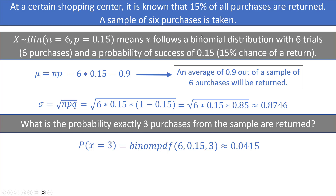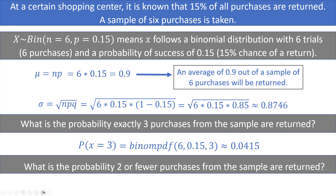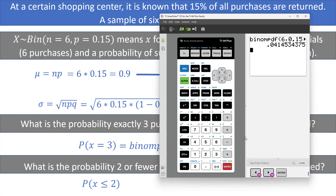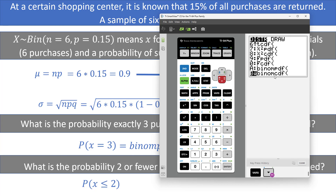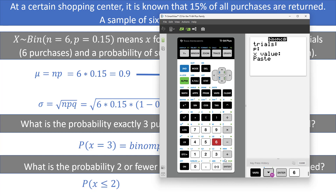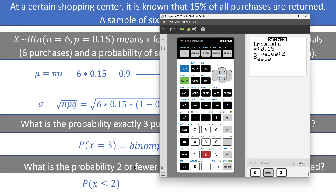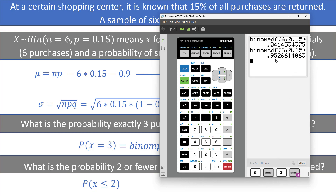What about the probability that two or fewer purchases from the sample are returned? That's P(X ≤ 2), which is a 'less than or equal to' probability, so we use binomial CDF. Go back to the distribution menu, scroll down to binomial CDF, and press enter. We still have 6 trials and p of 0.15, but now our X value is 2. This calculates the probability that two or fewer purchases are returned. Press enter and we get 0.9527 — about 95.27%.